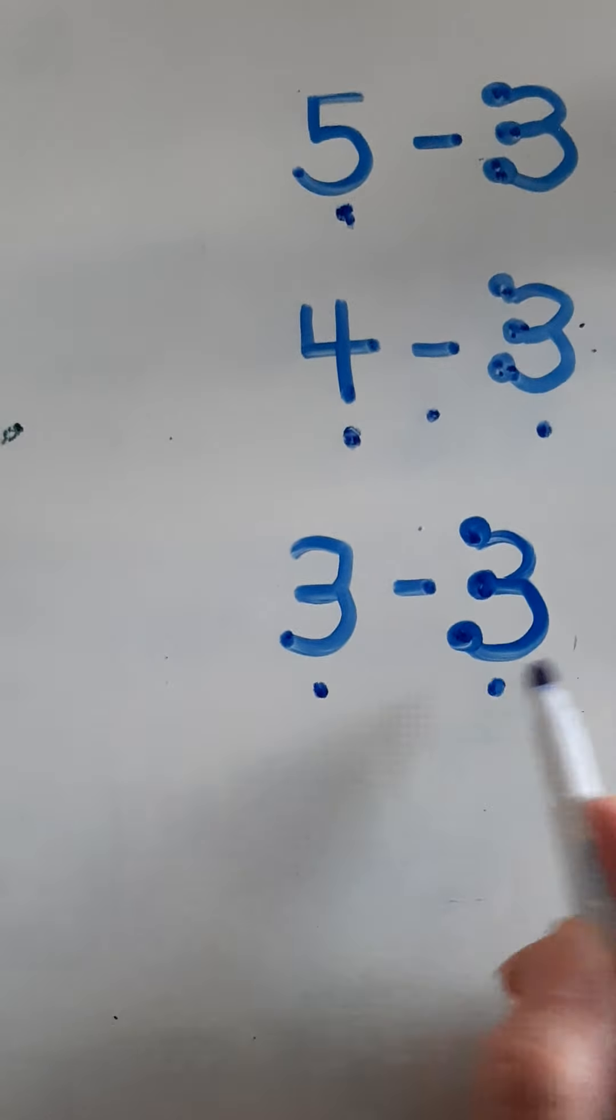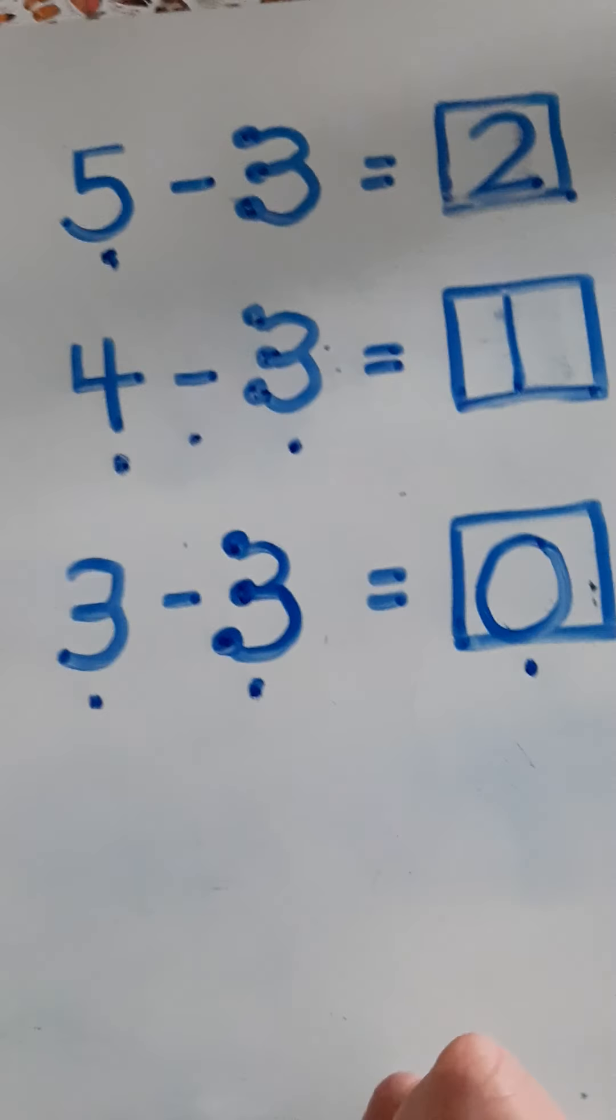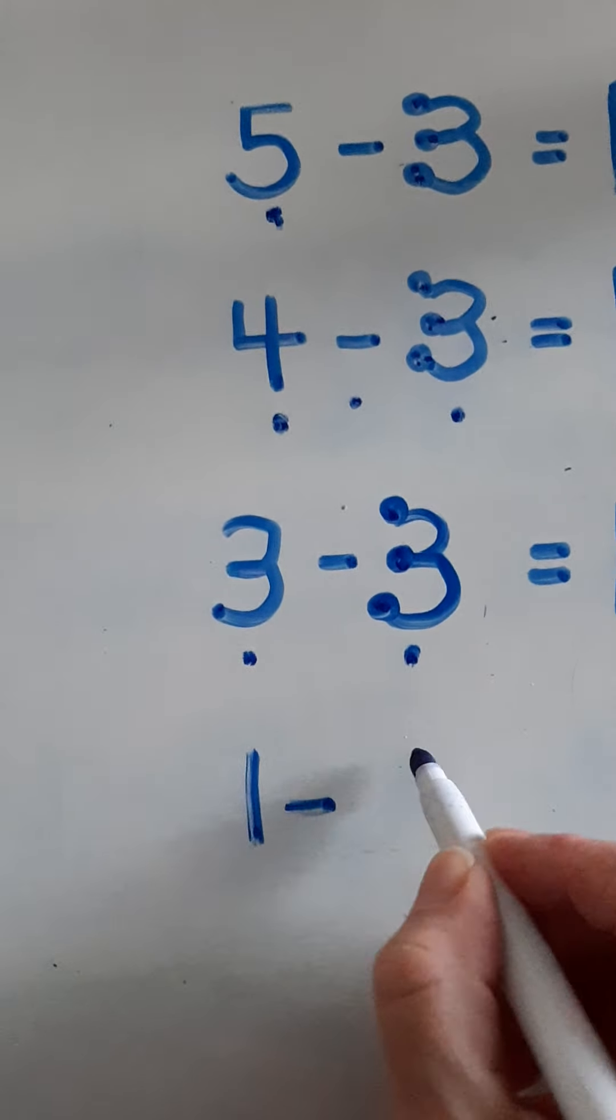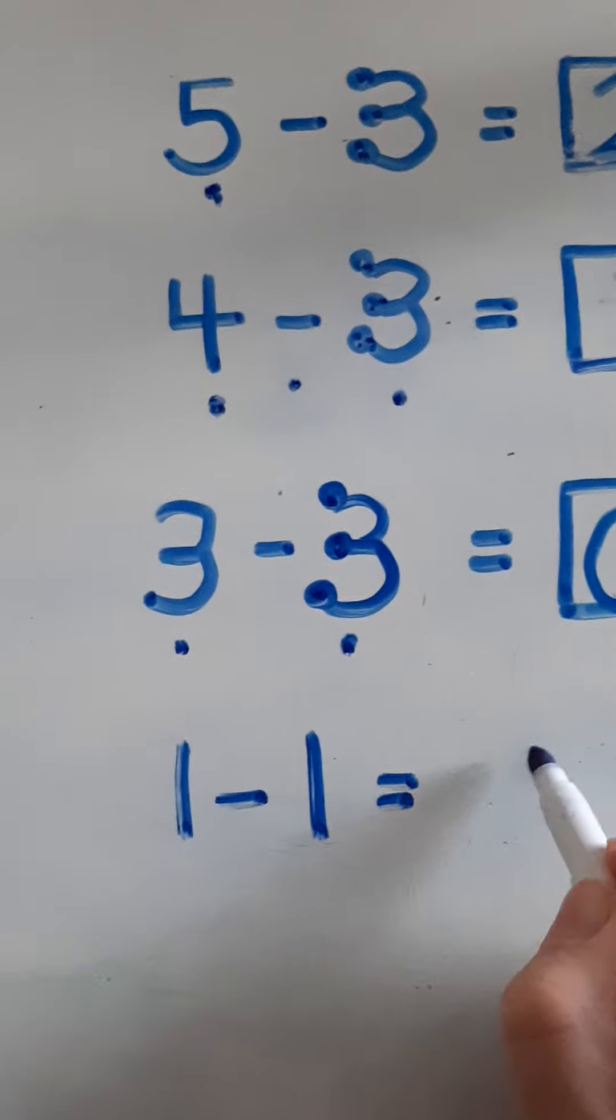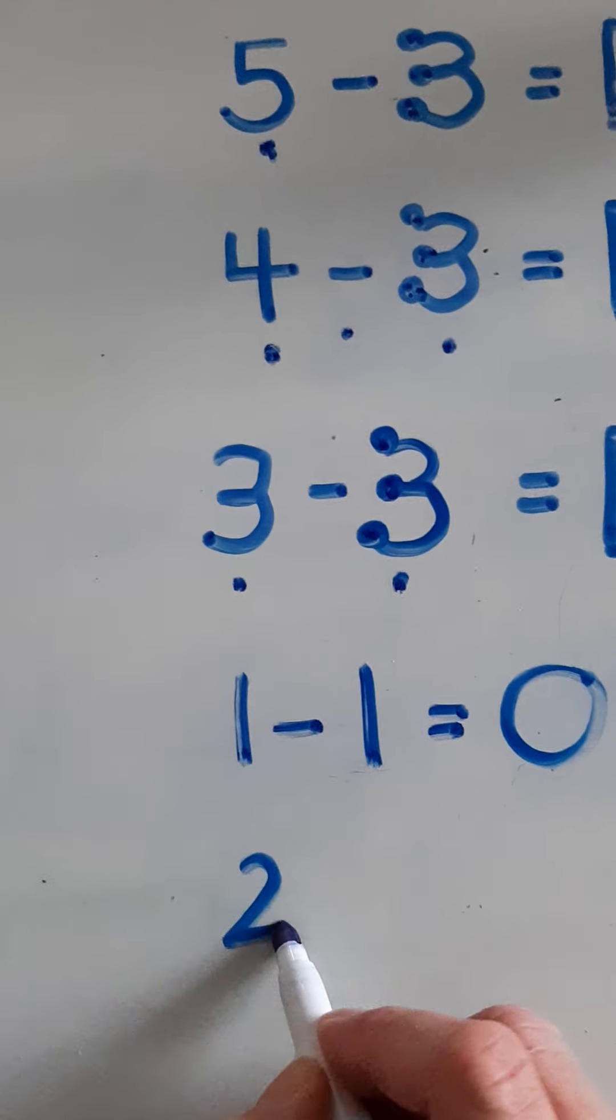Let's try 3 take away 3. Three. Now I'm going to count backwards: 2, 1, 0. Three take away 3 equals 0.